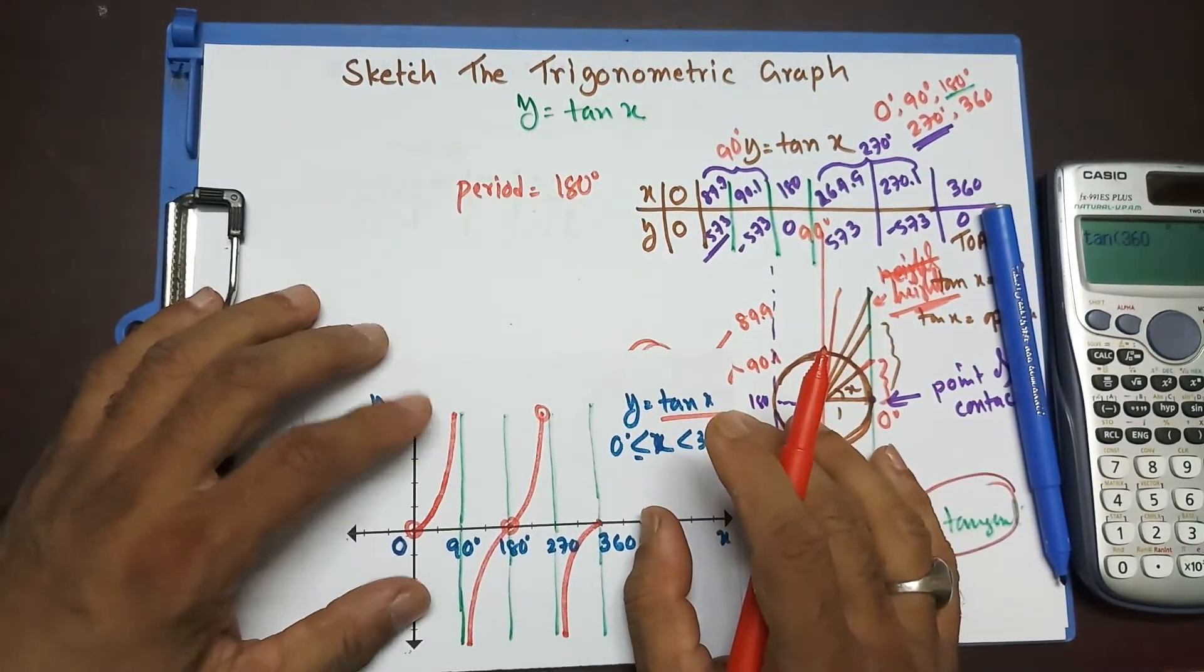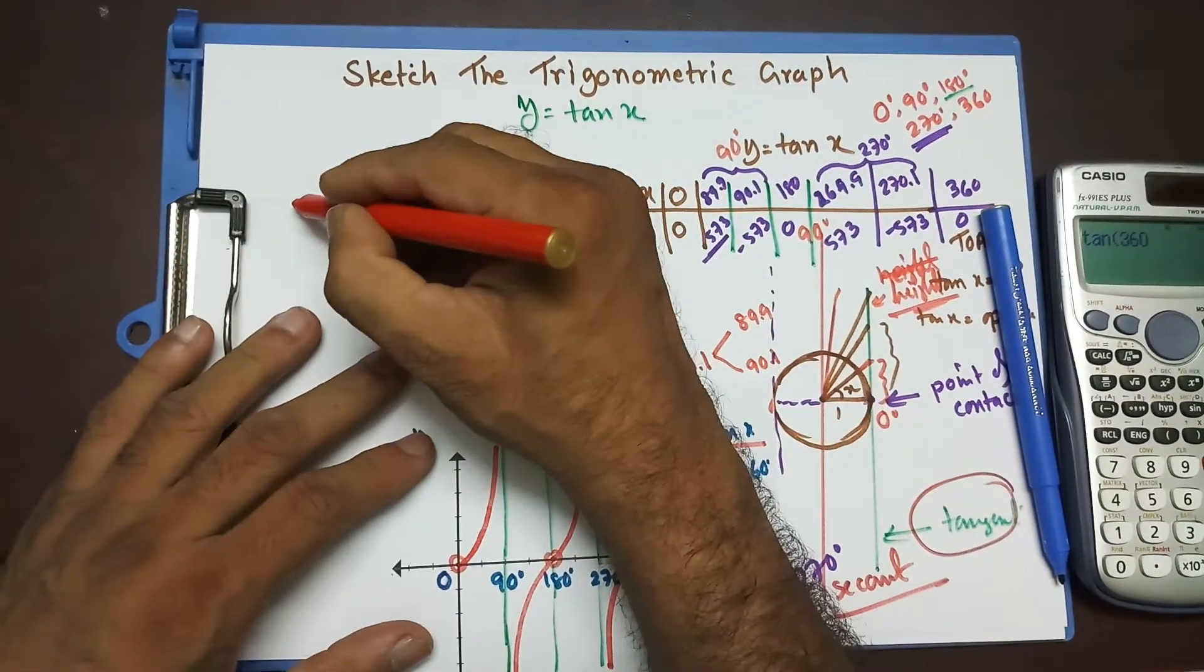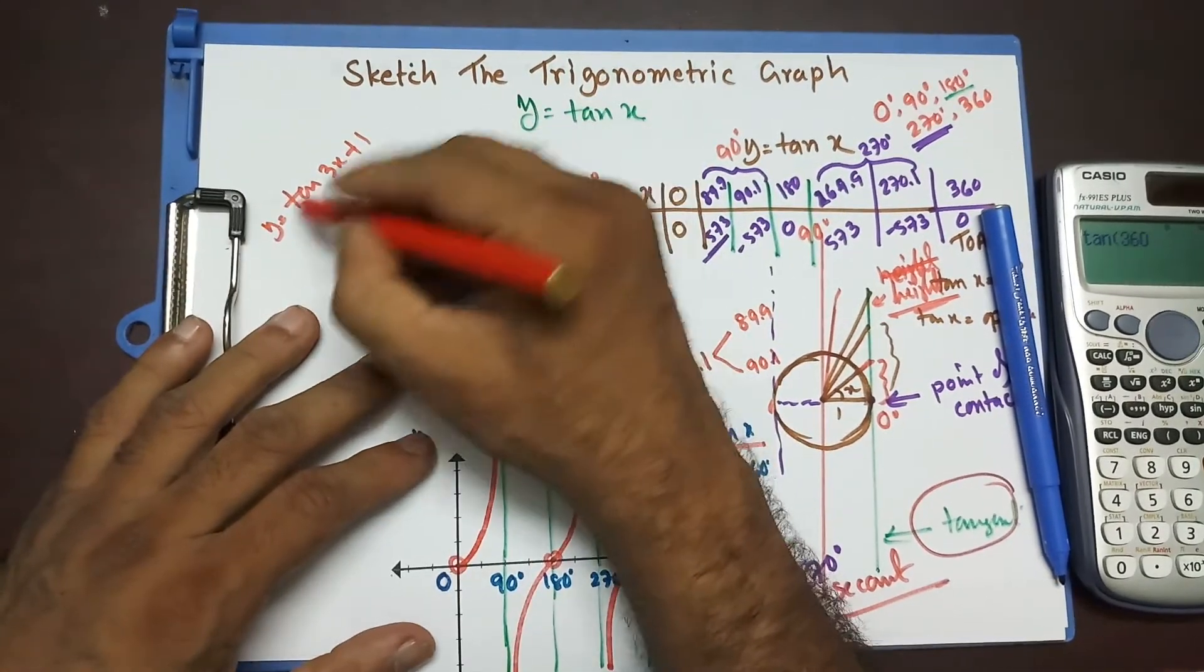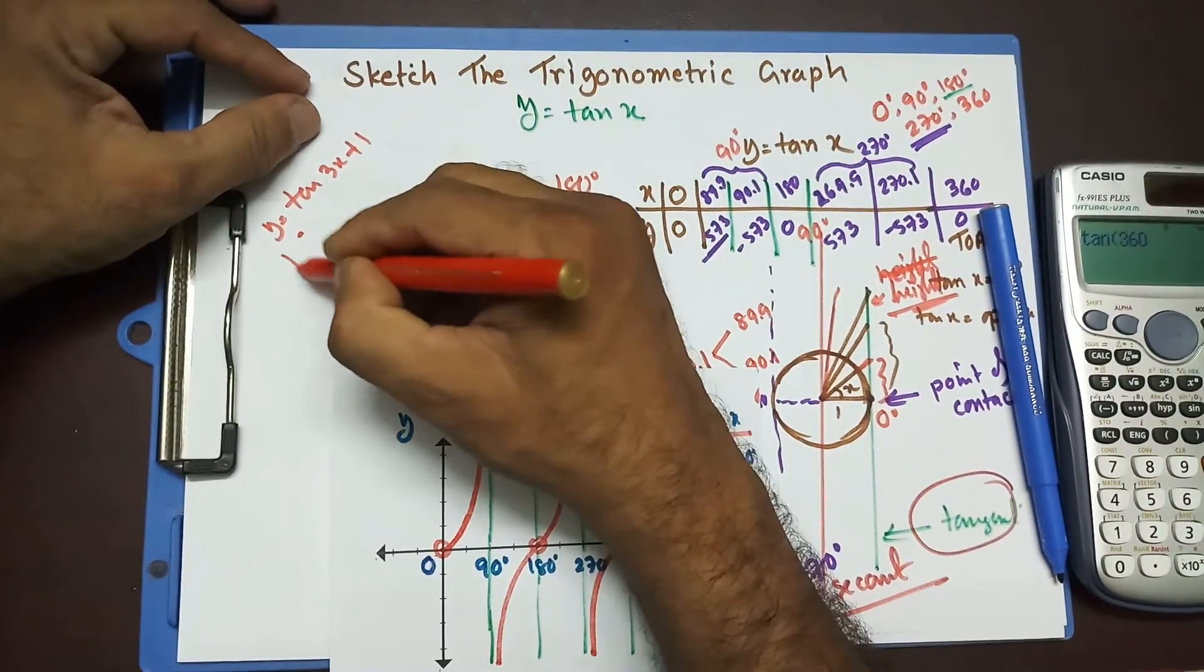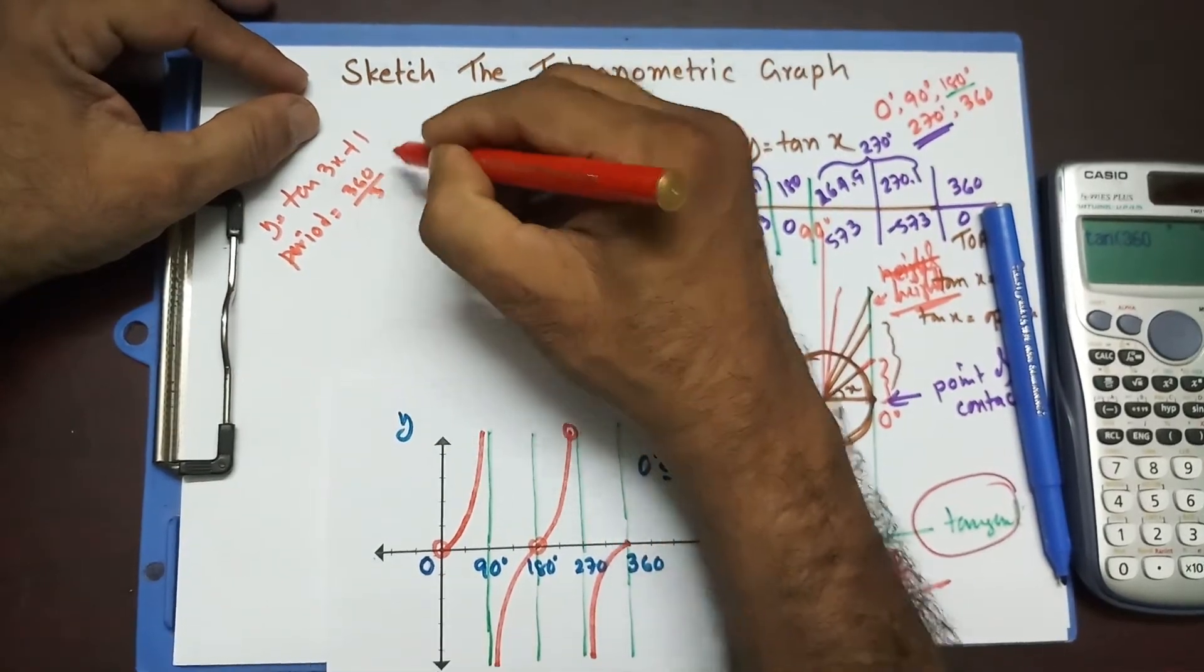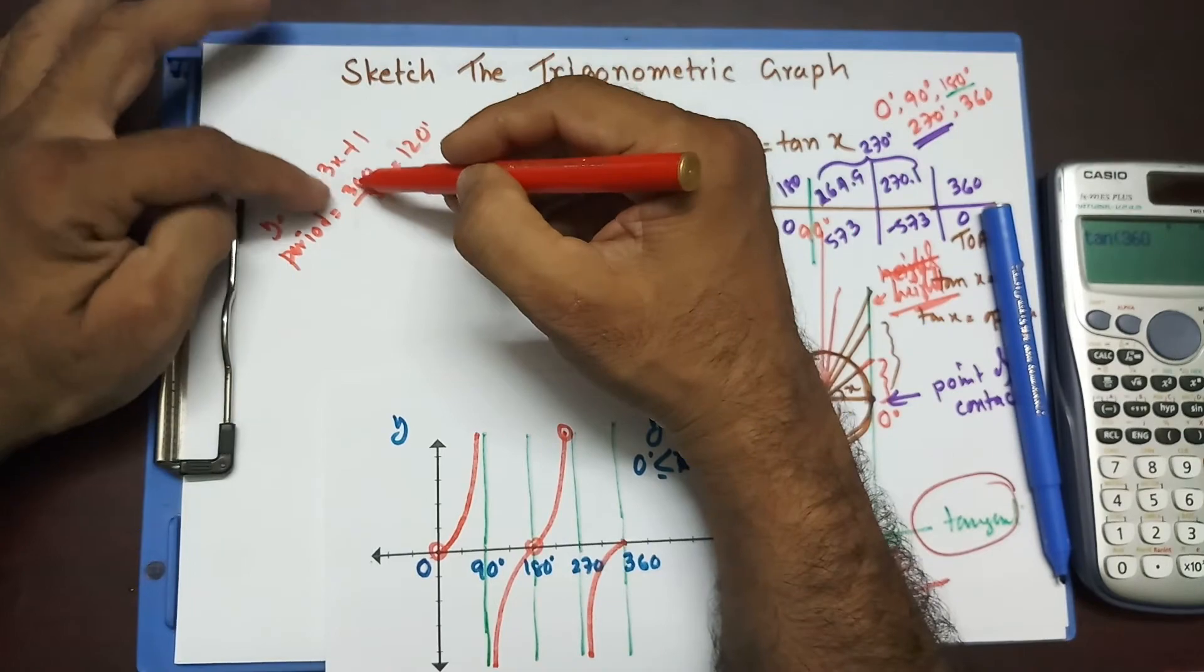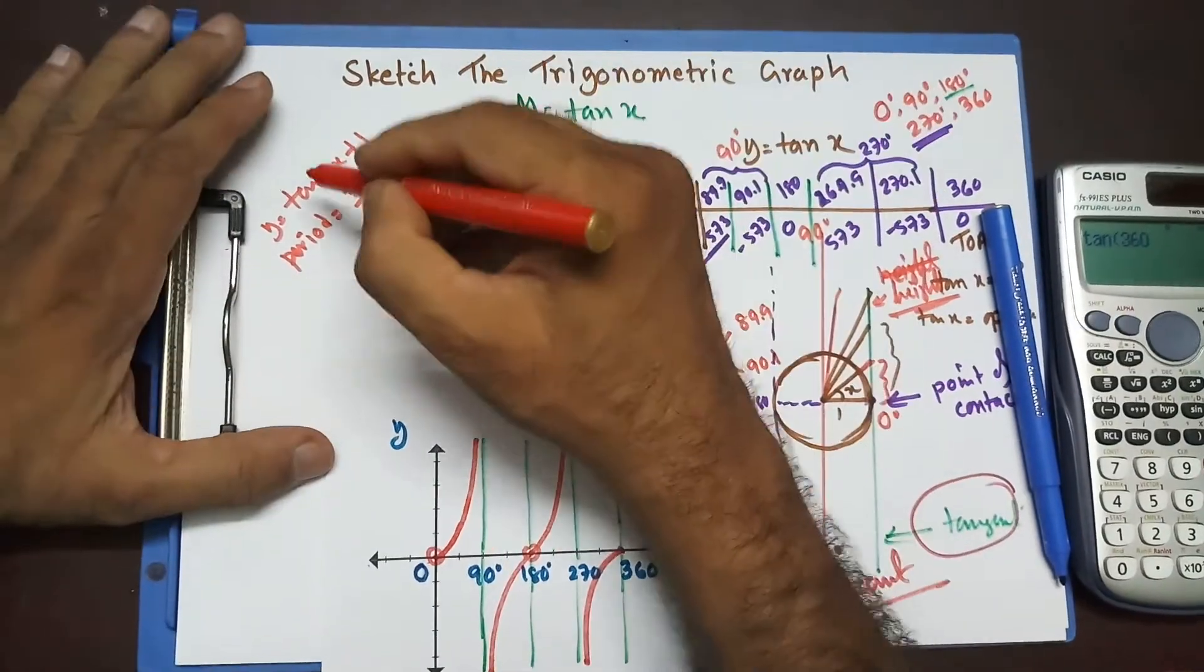Most of the time in your O-level exams, they are asking you, let me give you an example. Tan 3x plus 1. y equal to that. What is the period of this function? Then, most of the student, they do period equals to 360 divided by 3. That's going to be 120. And they are pretty happy about that because they know this rule. B is going to be underneath of 360 degree. And the period is 120.